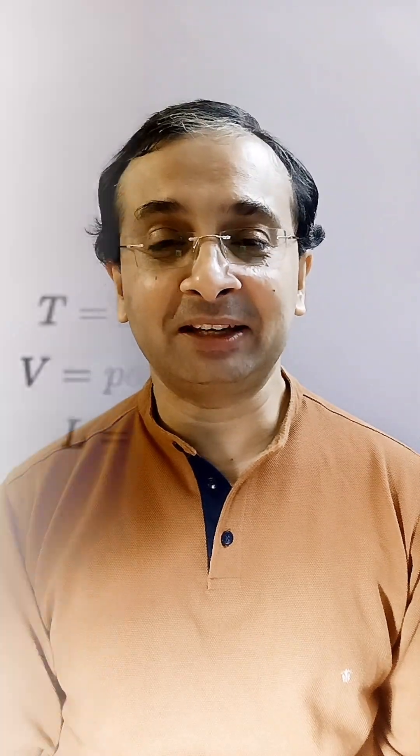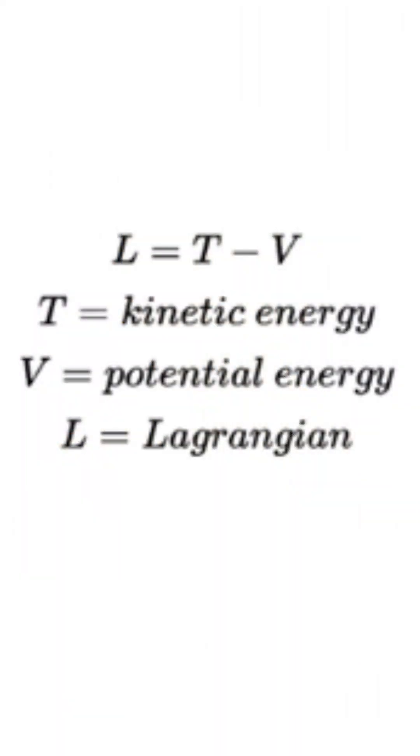The Lagrangian equation looks something like this. It is the kinetic energy denoted by T minus the potential energy V.